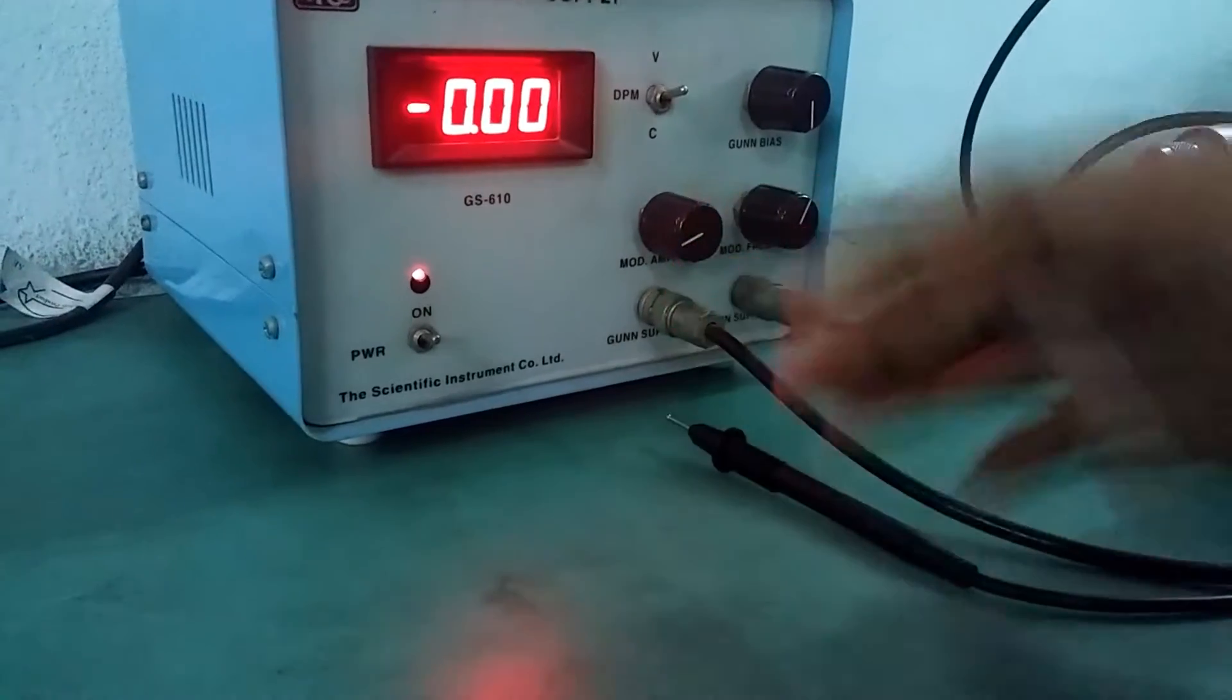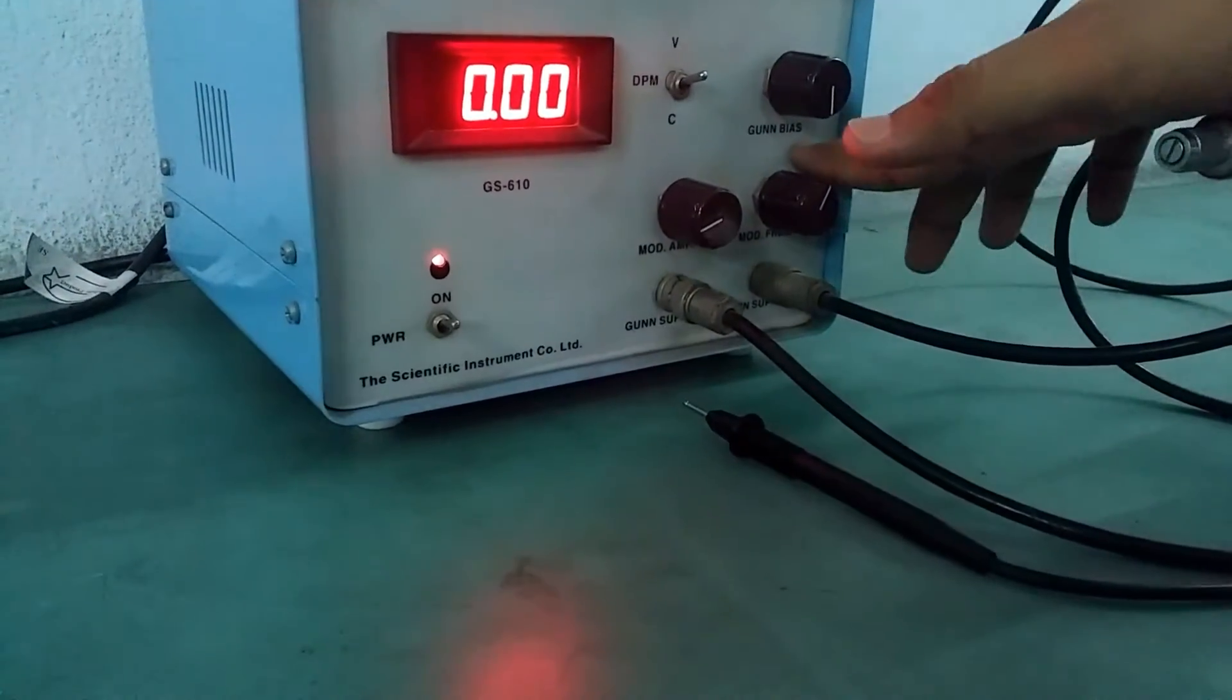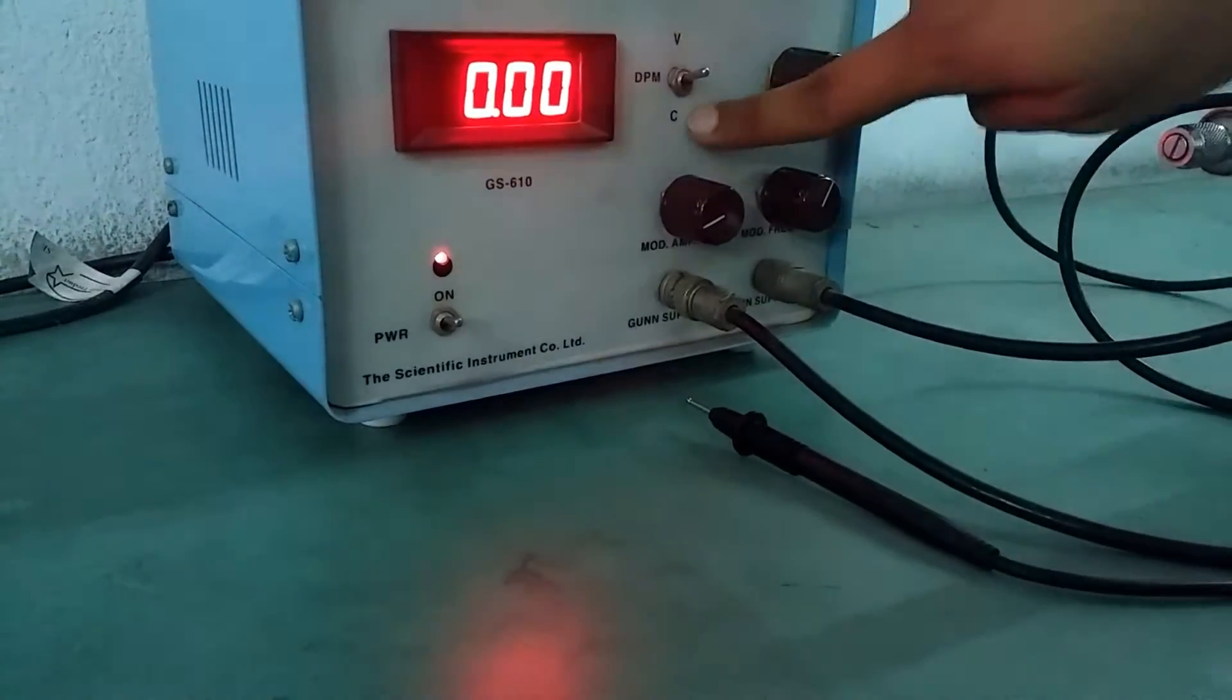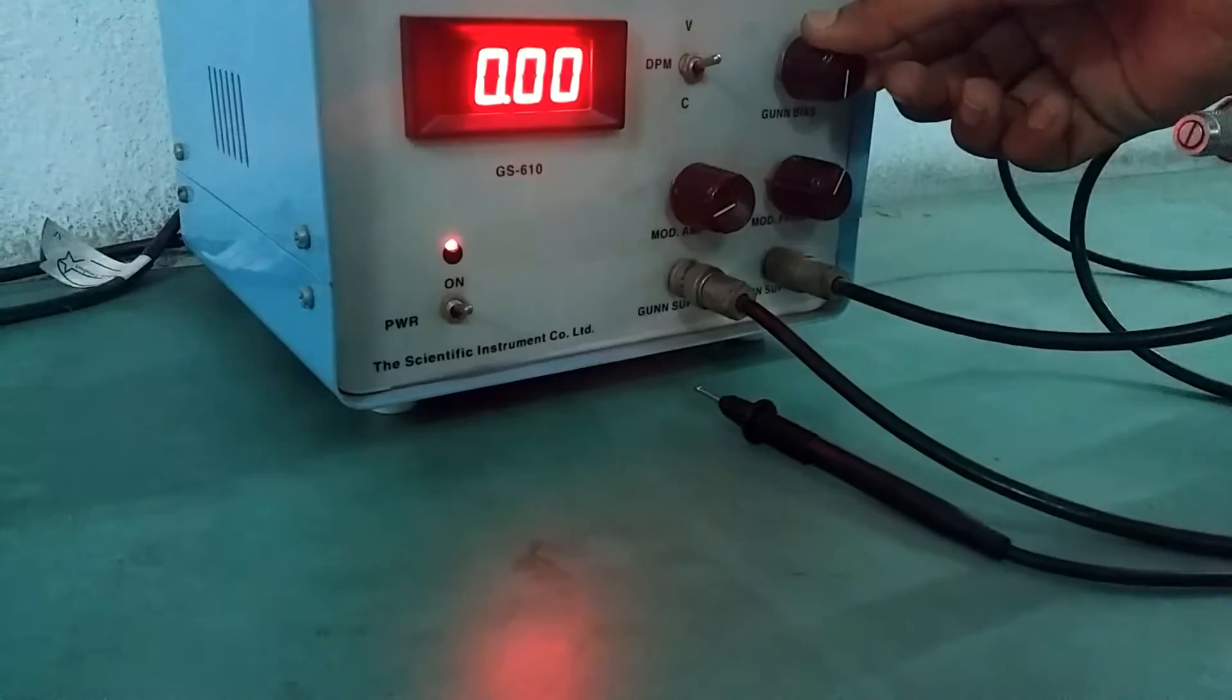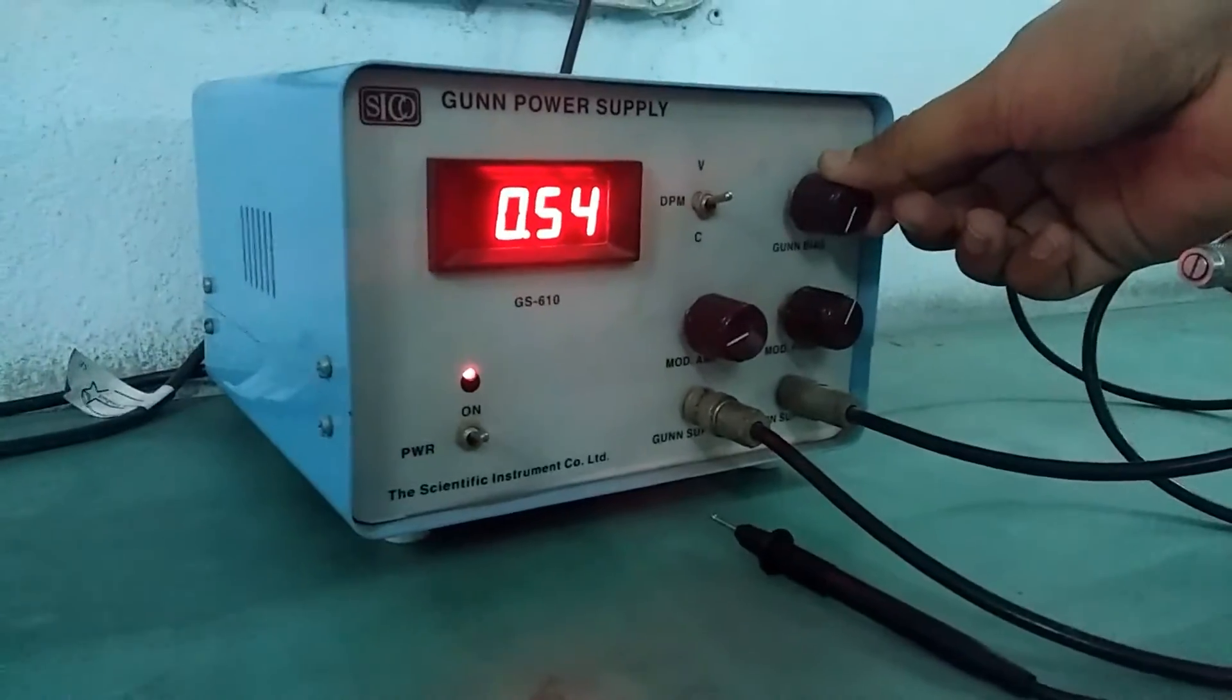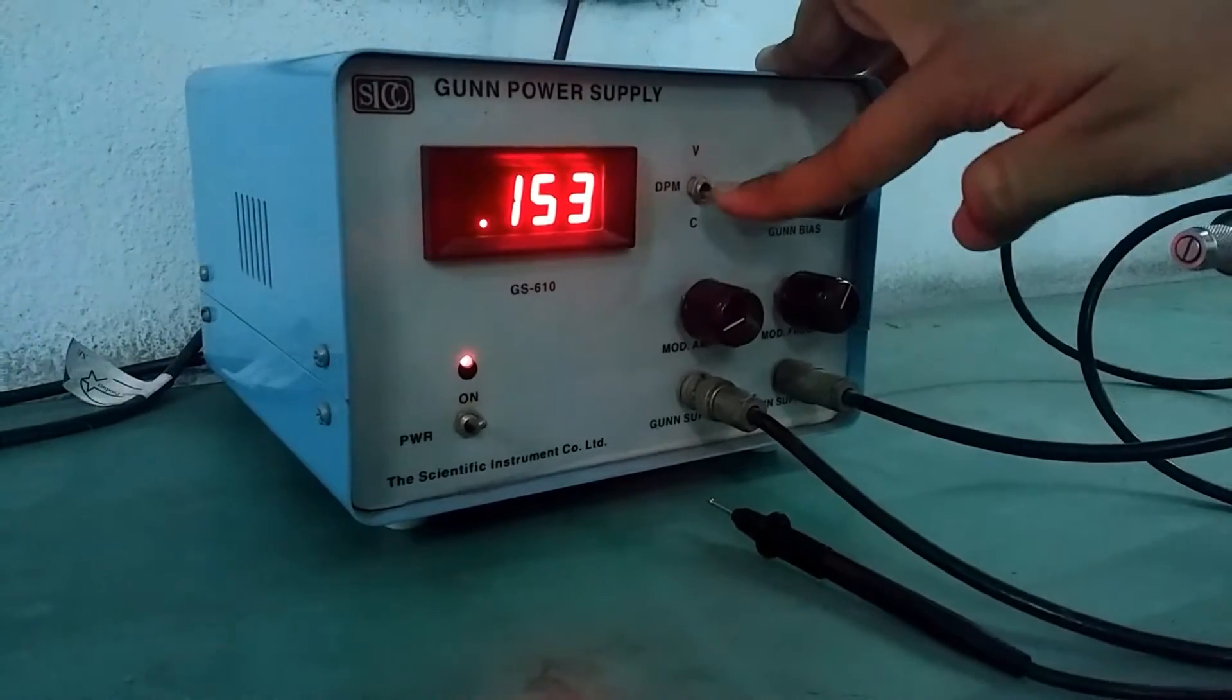We can give a modulating amplitude. Now, there are two modes, the V mode and the C mode. This is the current and this is the voltage. So, we will gradually increase the multiplier's voltage and we will note the corresponding current.